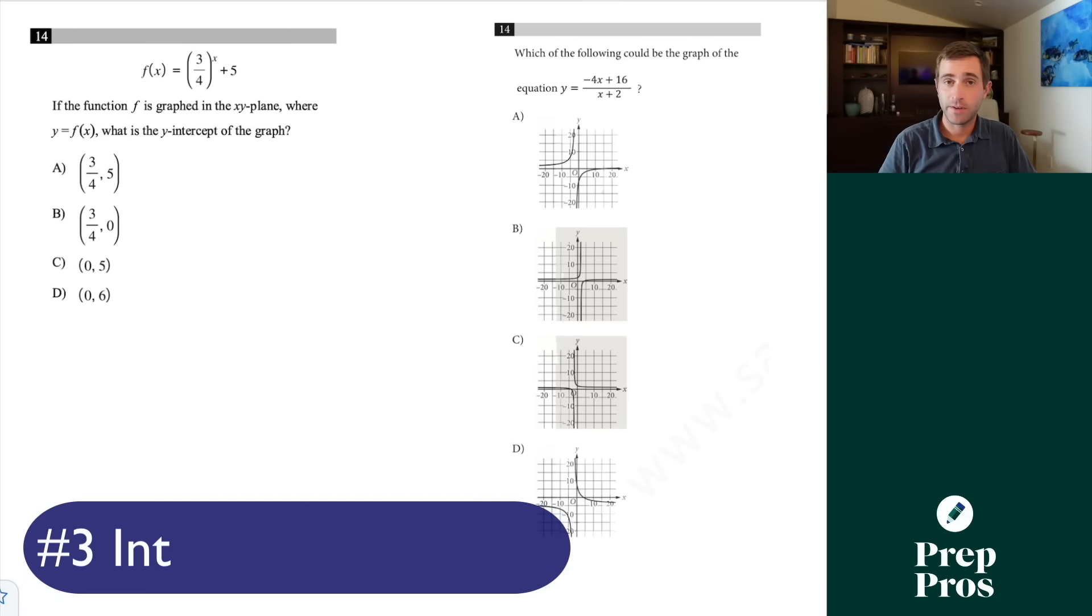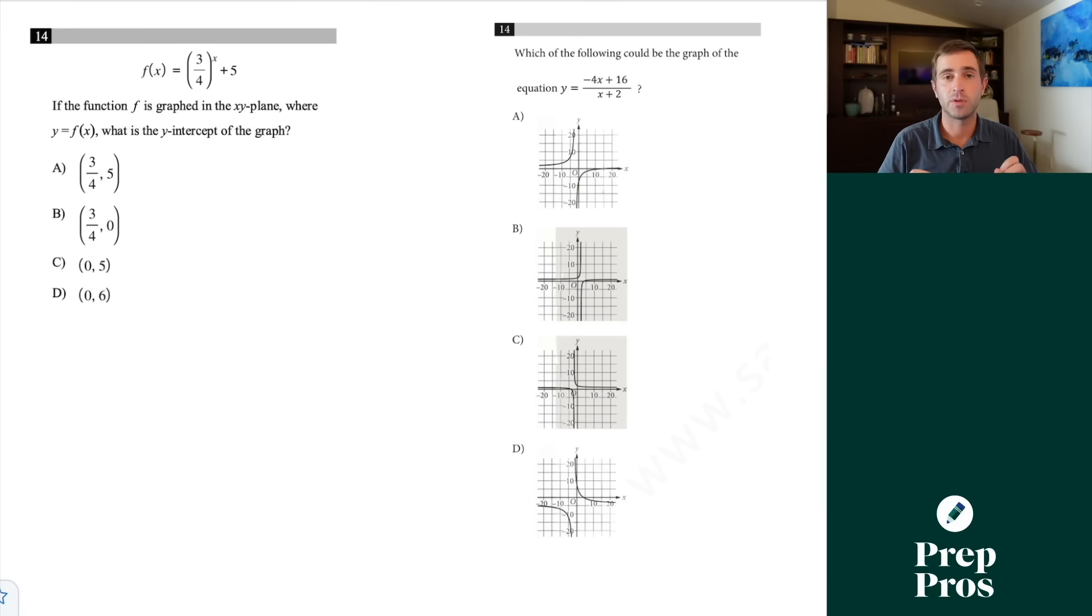The next thing you're definitely going to see are intercept questions. These come in a few different forms, but there's just two really simple things to remember. We find our y-intercept when x equals 0, and we find our x-intercept when y equals 0. If we're looking for the y-intercept of this graph, it's as simple as plugging in 0 for x. The trap the SAT wants you to fall for is forgetting that anything to the 0 power equals 1. If we remember that, our y-intercept is just 1 plus 5, giving us the correct answer of D.